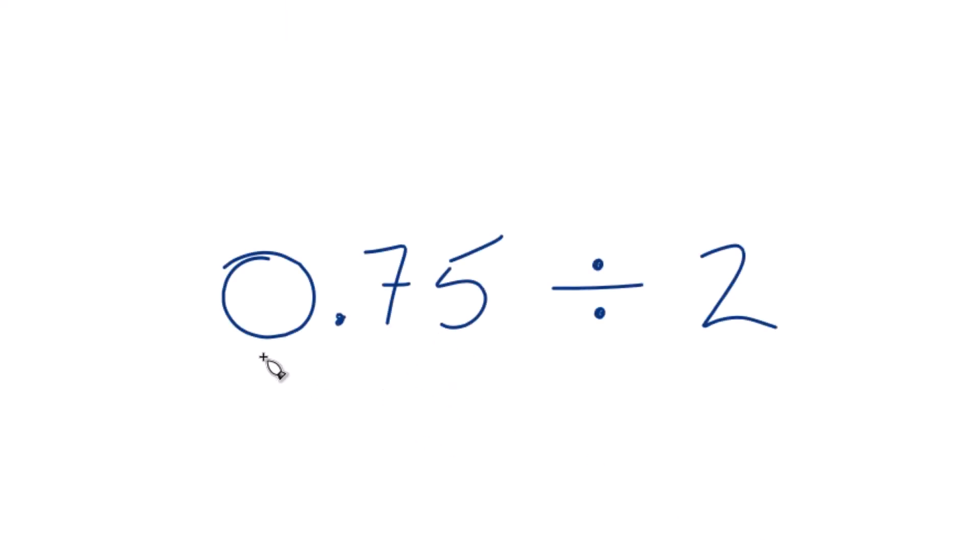If you need to know how to divide 0.75 by 2, here's how you do it. So you could think of this as 0.75 just over 2 like that. That's another way to write it.